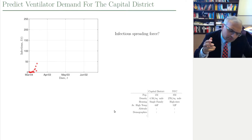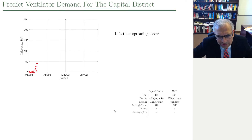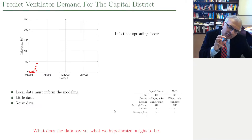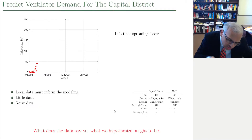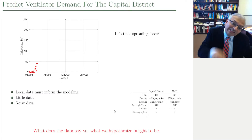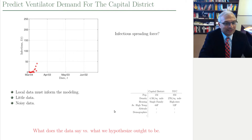This means that even if you know the infectious force in New York City, you don't know what it is in the capital district. That emphasizes that we're not interested in what we hypothesize ought to be based on what we see in other regions. We're interested in what does the data say — the local data, the data in the capital district.